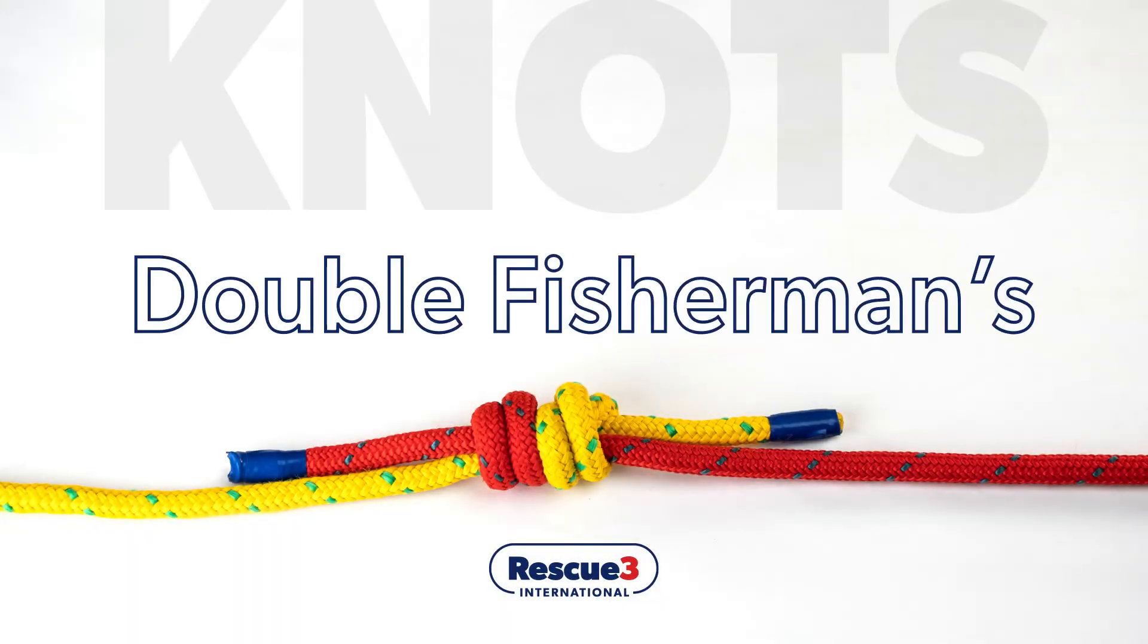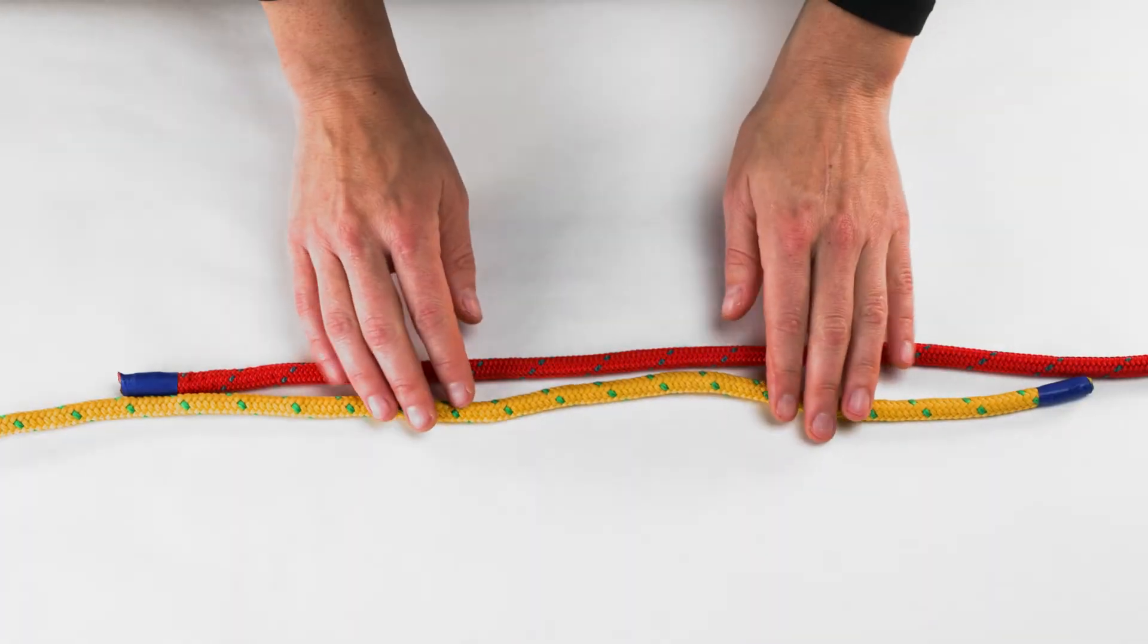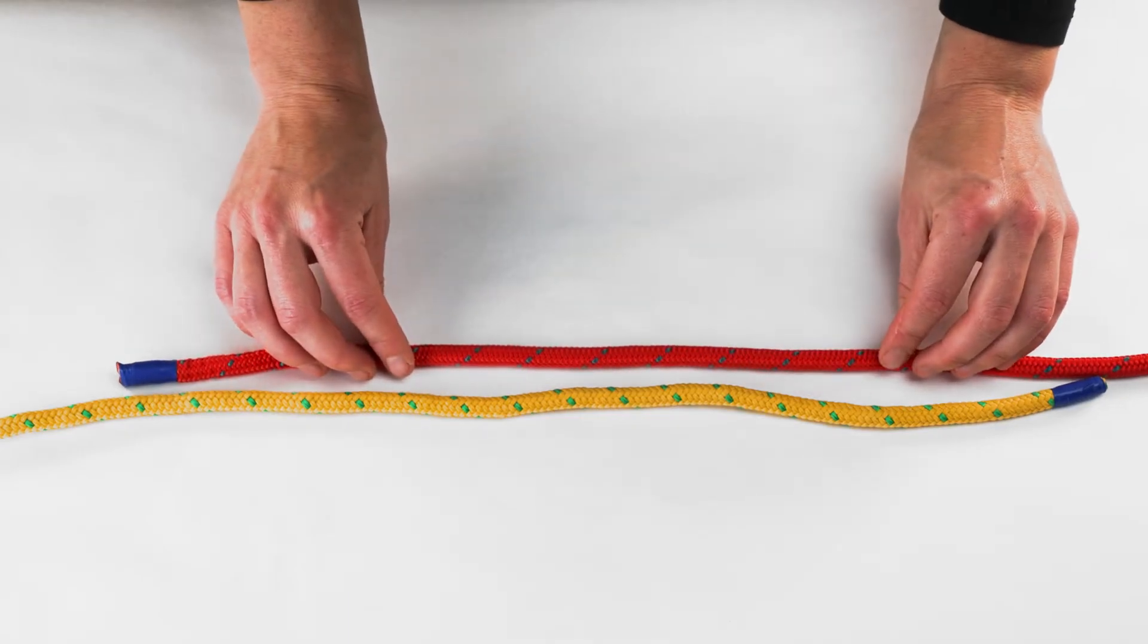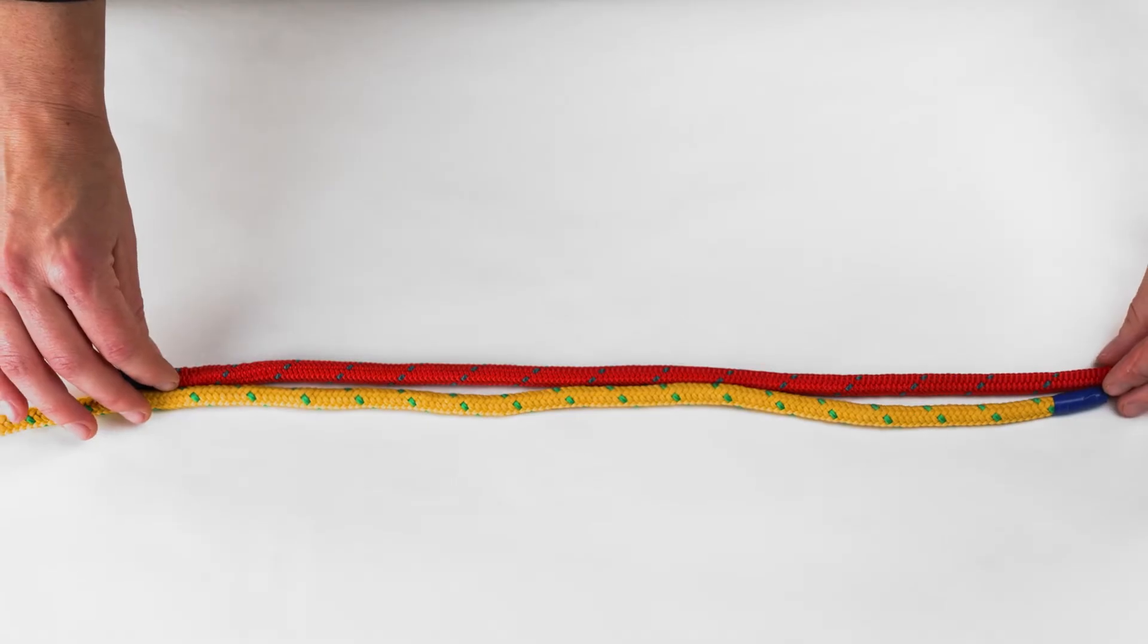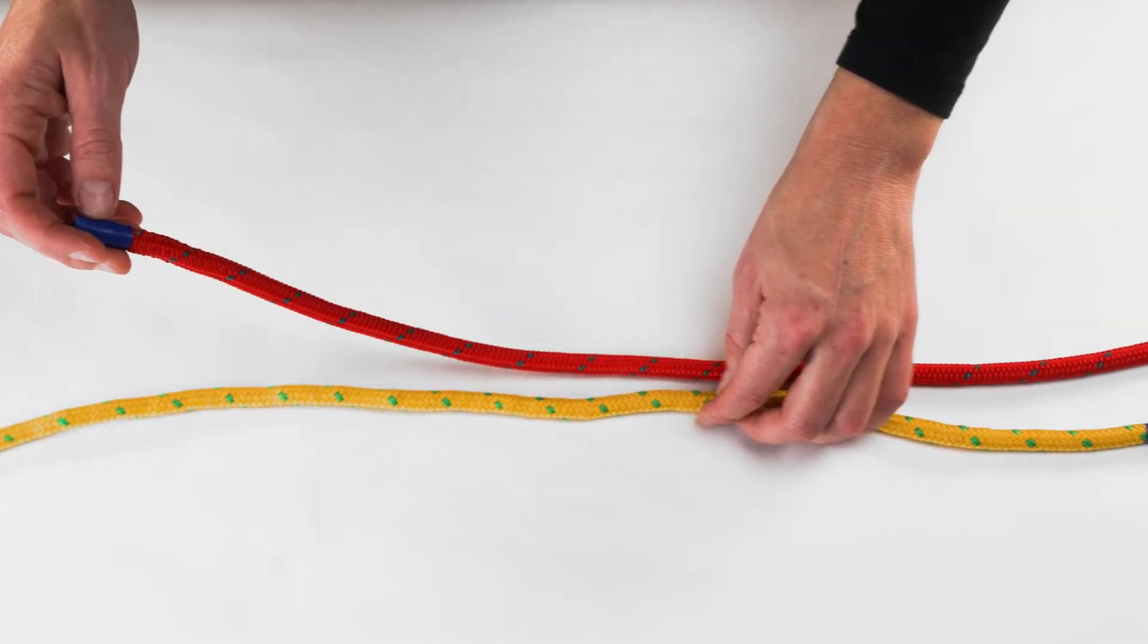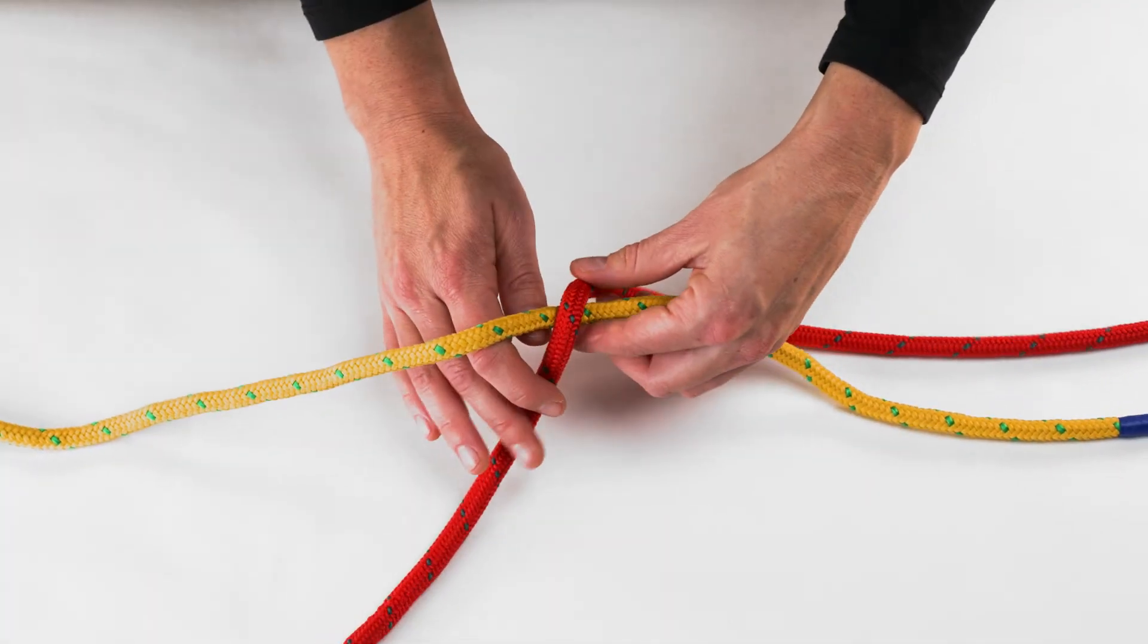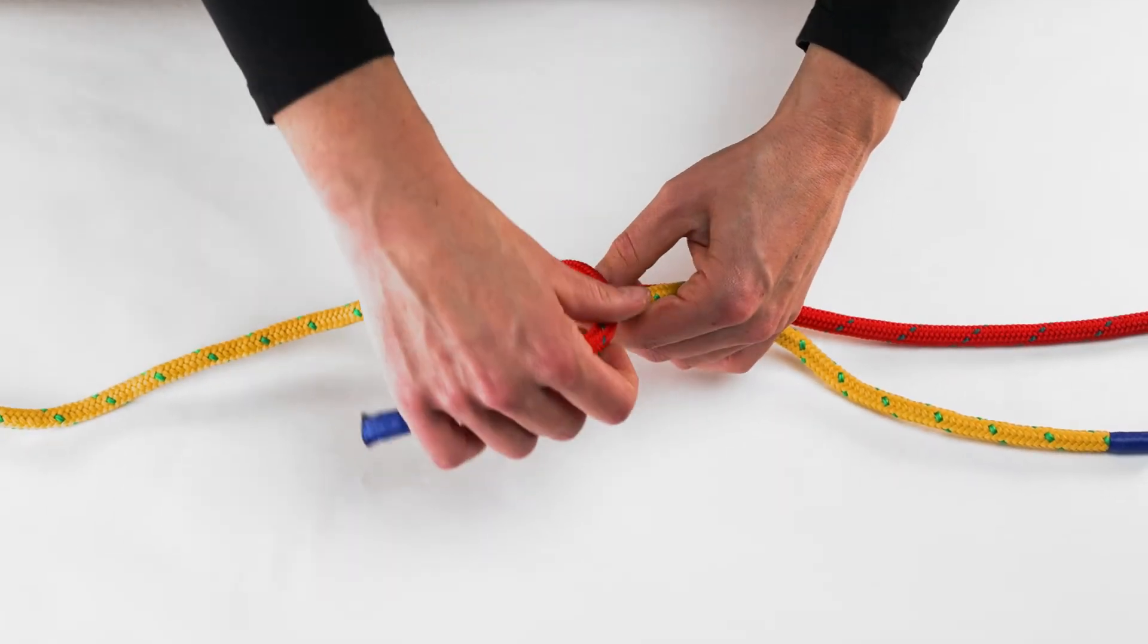Double fisherman's knot. To tie a double fisherman's knot, for clarity, ropes of two different colors have been used. First, start with the two ends of the ropes overlapping. Loop one of the rope around the other. Continue to loop the rope around, traveling back on itself.